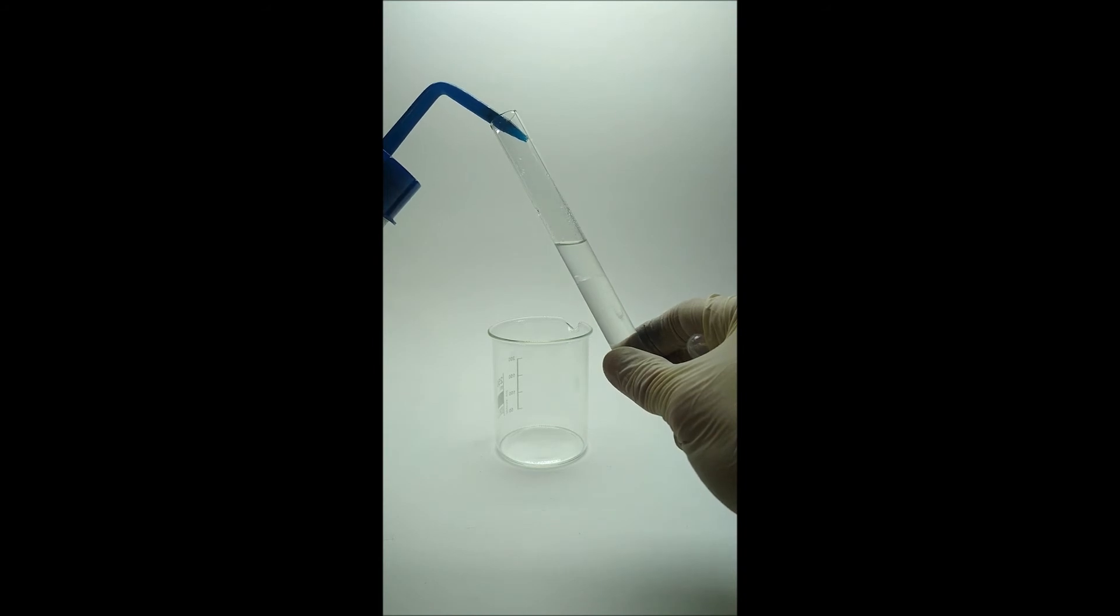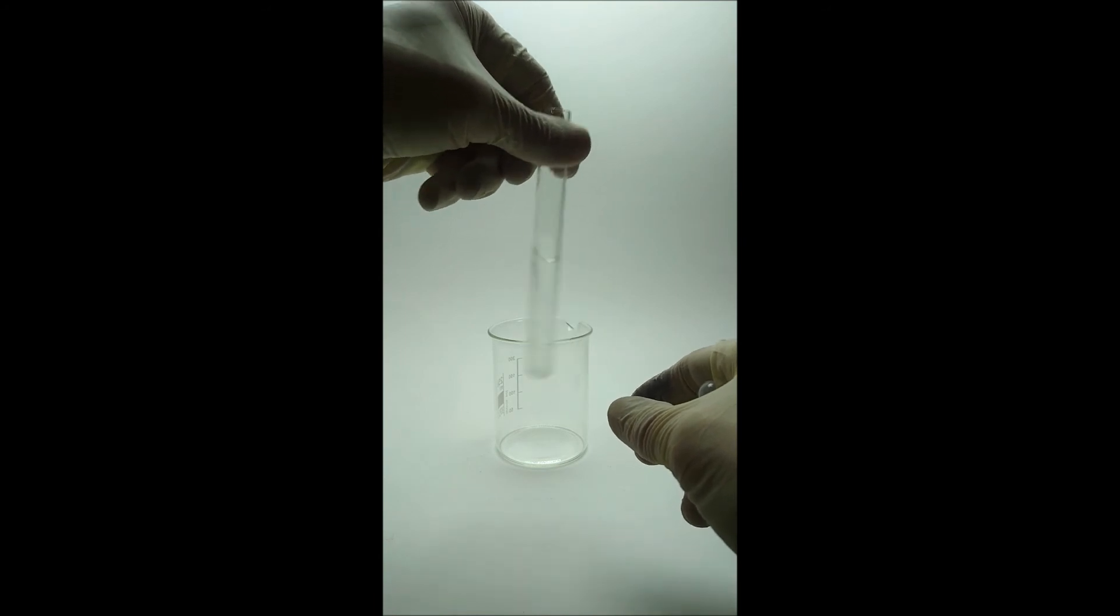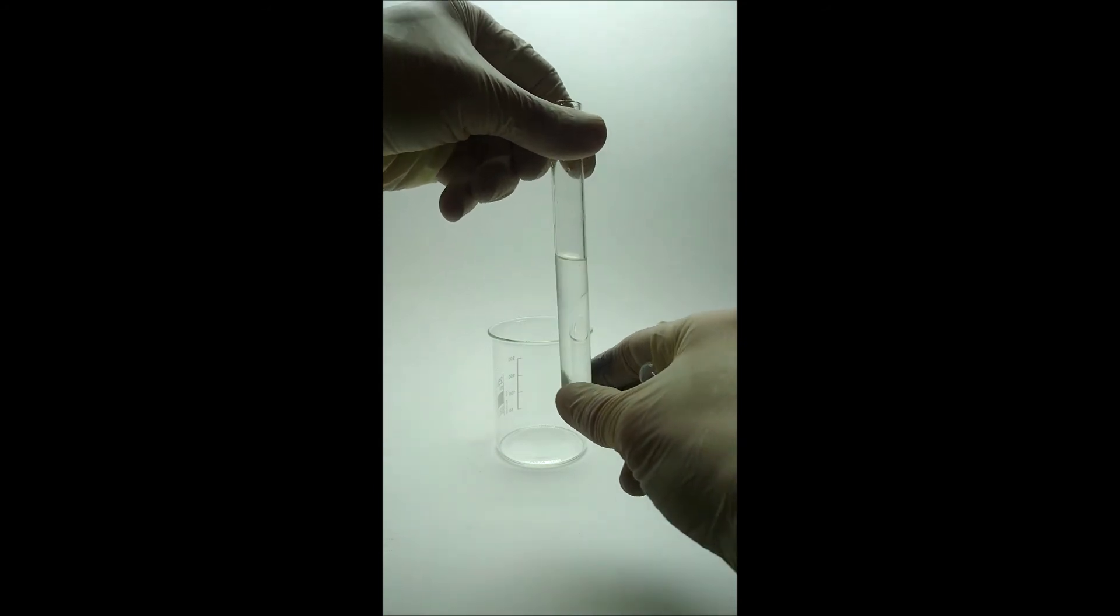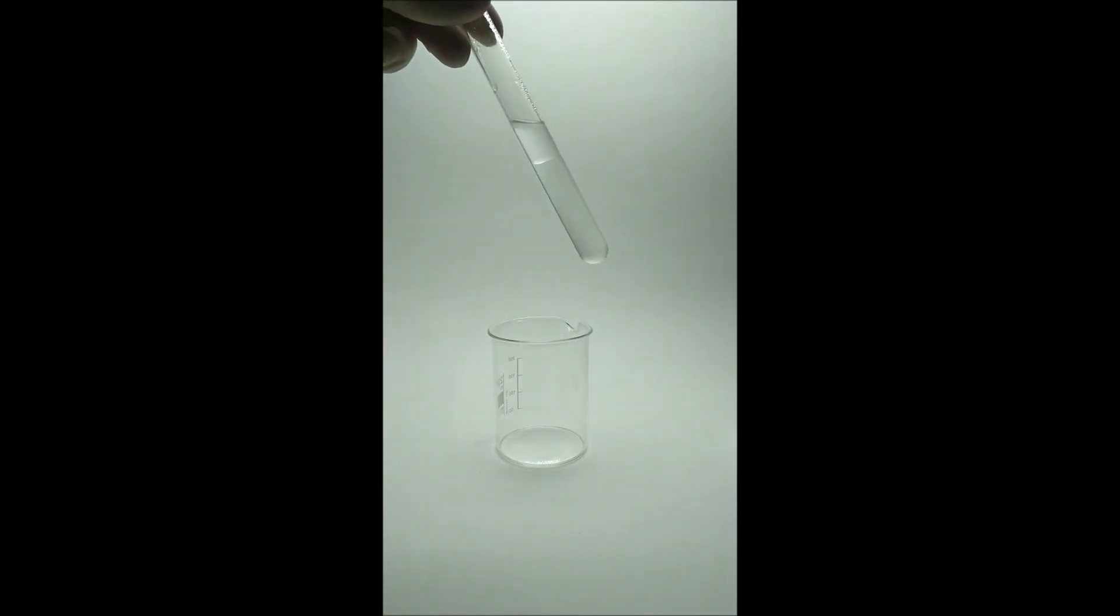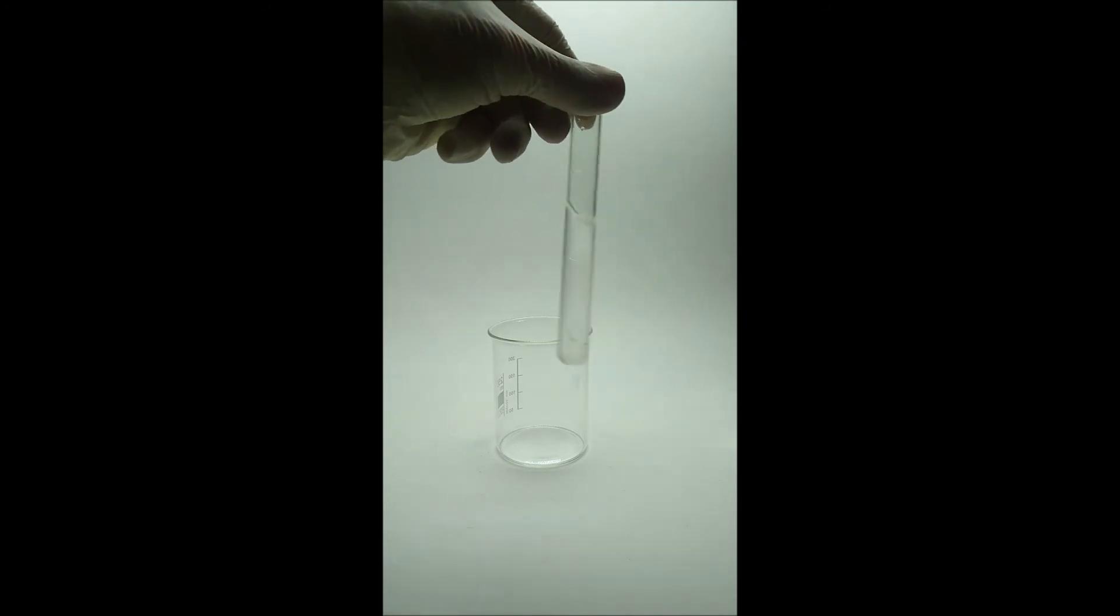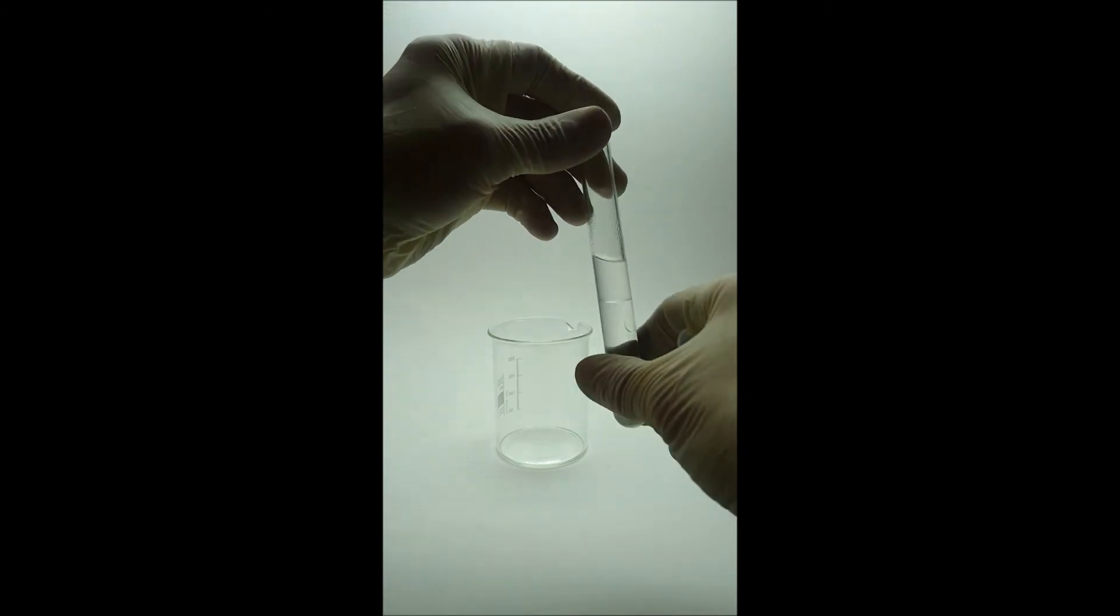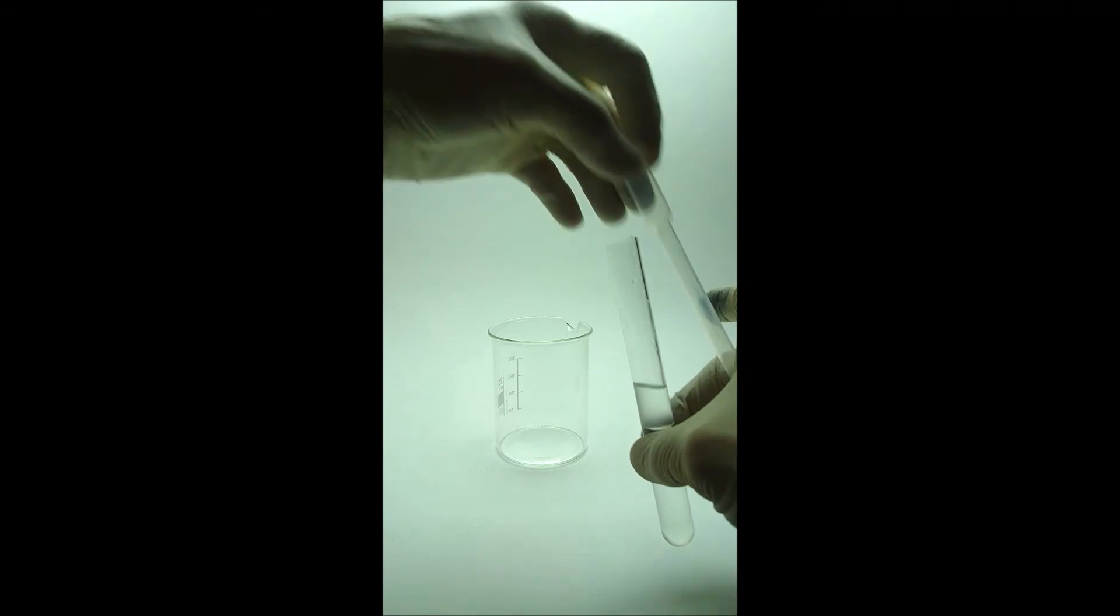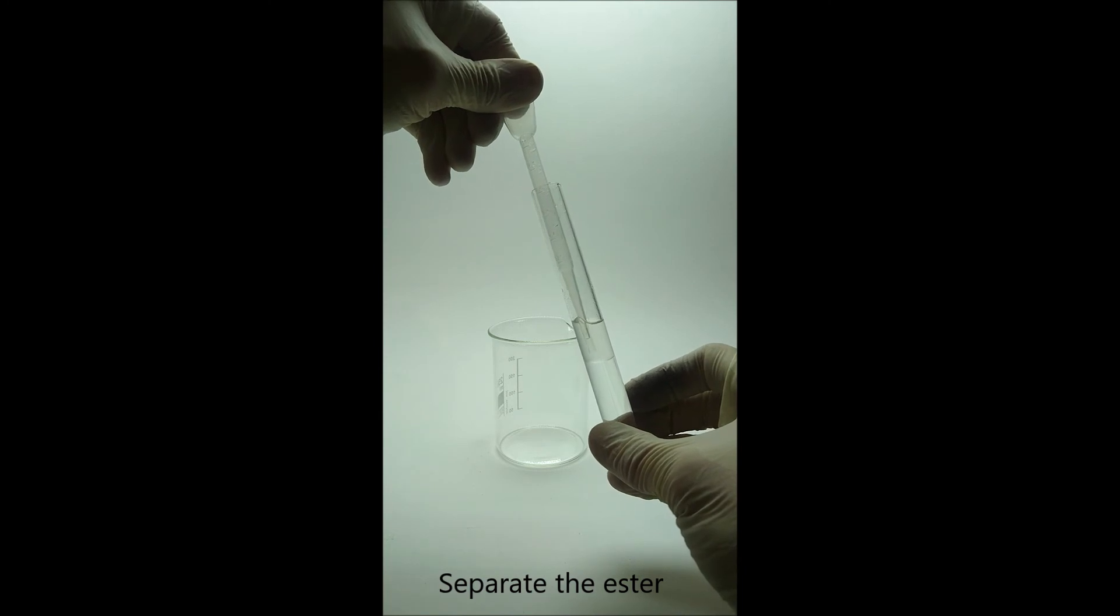So I'm just adding more water to be able to separate the upper layer well and to wash as much acid off the organic layer as possible. Now I'll just separate the organic layer to the beaker.